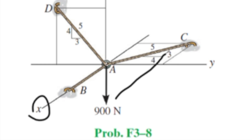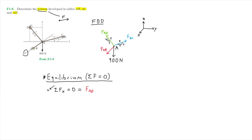From the free body diagram, the force along AC points away from us, which is negative, so in our equation this will be minus FAC times the proportion of the slope triangle: three along the x axis over the hypotenuse five. That is the x component of FAC, and these are the only forces acting along the x direction.